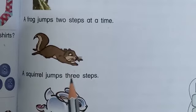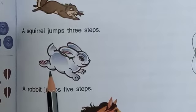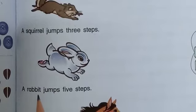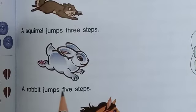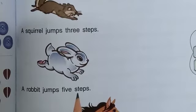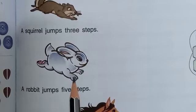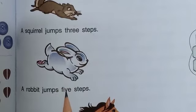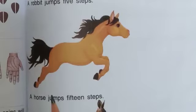Second one: squirrel — 3 times tables. Third picture is rabbit. Rabbit jumps 5 steps, so the rabbit's jumps are 5-5, meaning the 5 times tables.